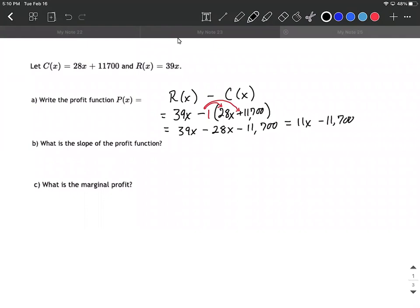Okay, so now we want to know what's going to be the slope of this profit function. Well, this is a linear function, which kind of corresponds with a line y equals mx plus b, the slope intercept form of a line. So you may notice that b, that would be our y-intercept, would be the negative 11,700.